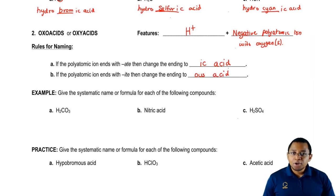Again, remembering your polyatomic ions is going to be essential for naming oxo or oxy acids. Without that, it's going to be really difficult.